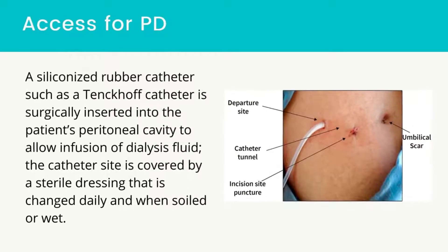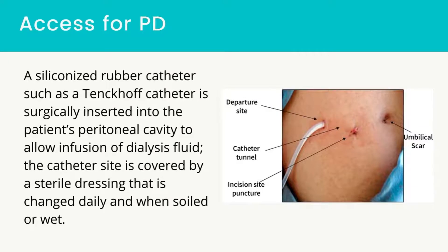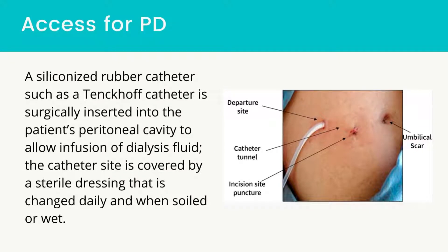Access for PD — a siliconized rubber catheter, such as a Tenkoff catheter, is surgically inserted into the patient's peritoneal cavity to allow infusion of dialysis fluid. The catheter site is covered by a sterile dressing that is changed daily and when soiled or wet. The preferred insertion site is 3–5 cm below the umbilicus. The catheter is tunneled under the skin, deep enough through the fat and muscle tissue to the peritoneum.